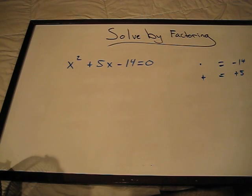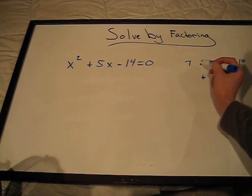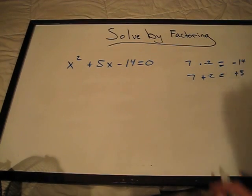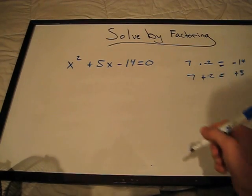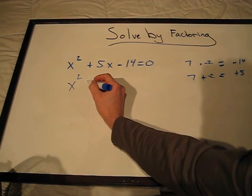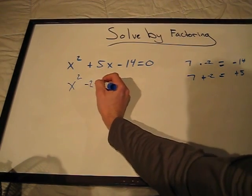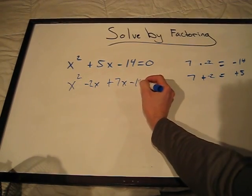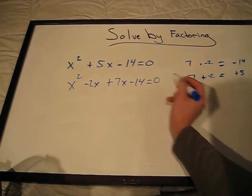Those two numbers are 7 and negative 2. Now we'll rewrite our problem with our new term. x squared minus 2x plus 7x minus 14 equals 0.